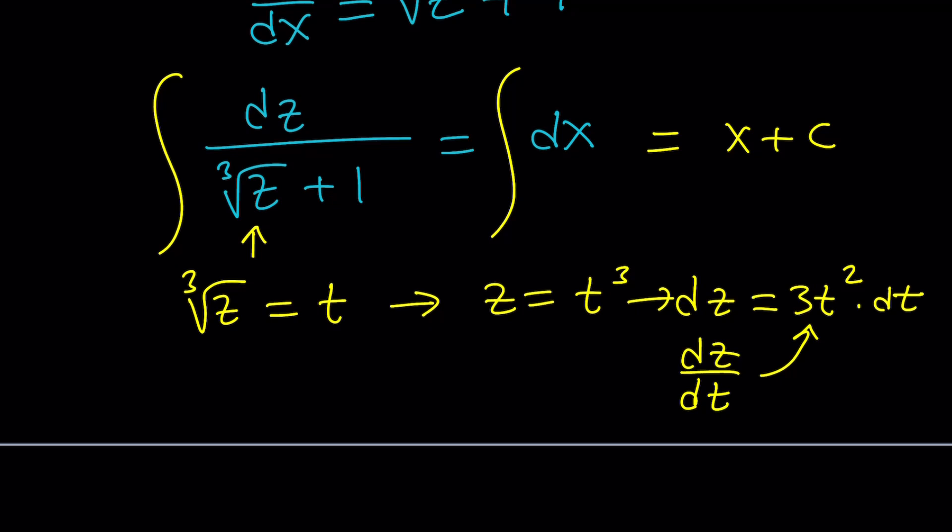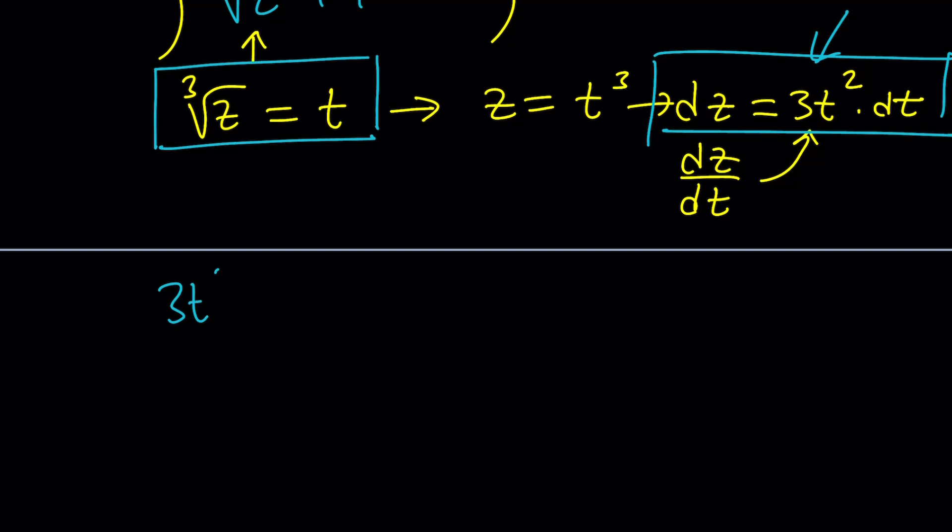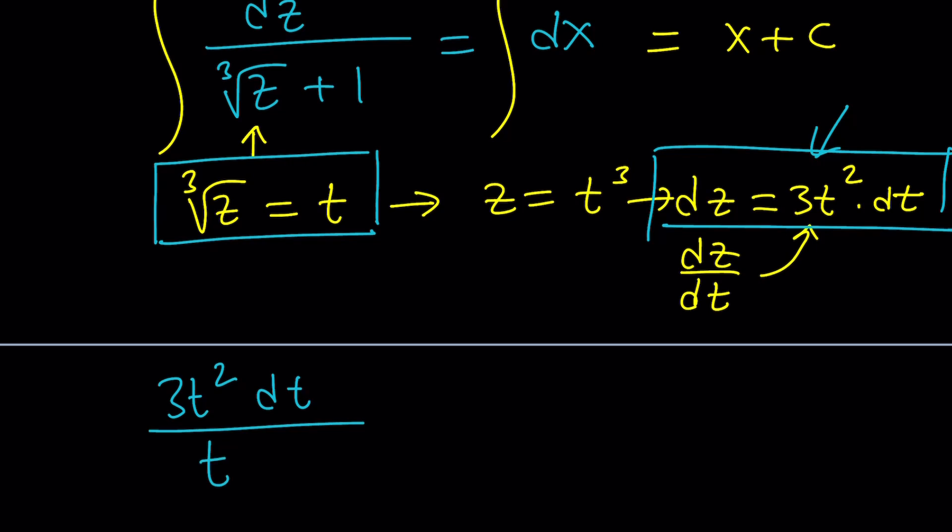So we got dz and we have this cube root of z. Now we can go ahead and plug it in. dz will be replaced with 3t squared dt. I could also separate the dt, but it doesn't matter. No big deal. At the bottom, we're going to have t plus 1.